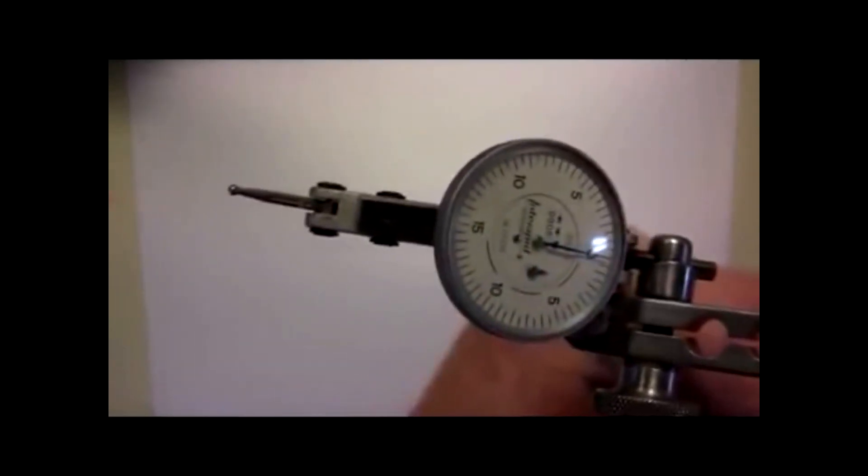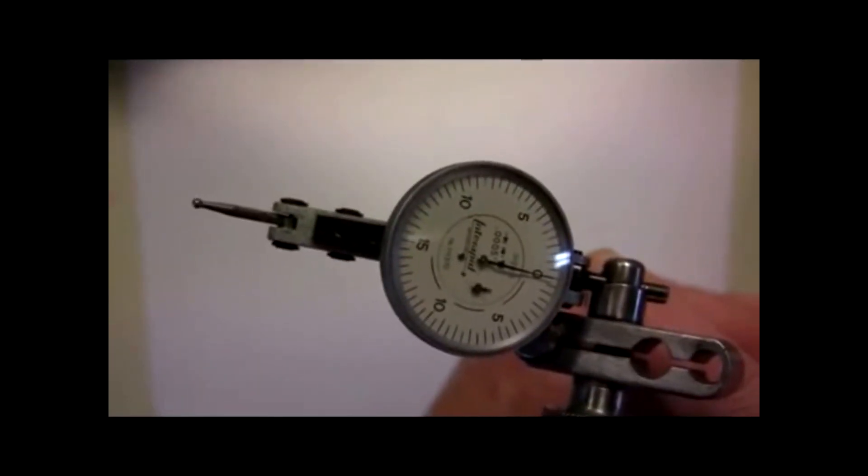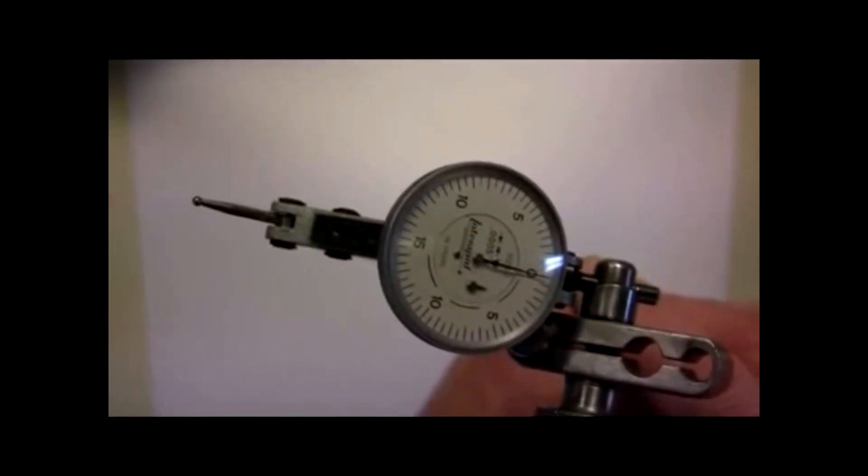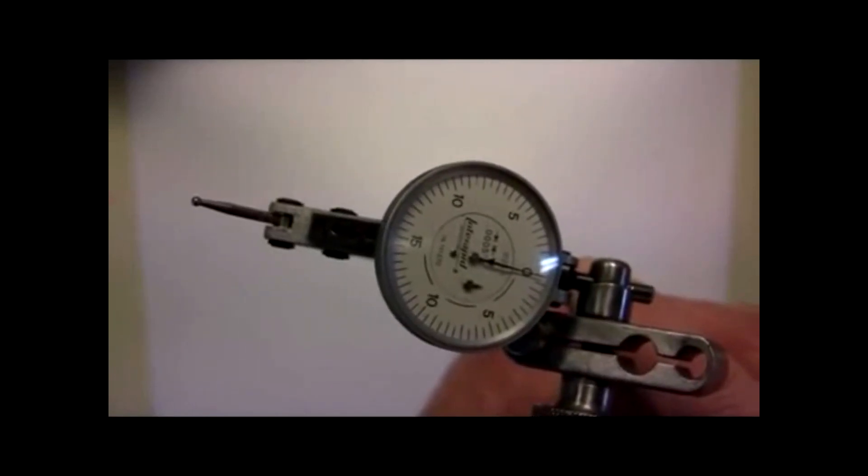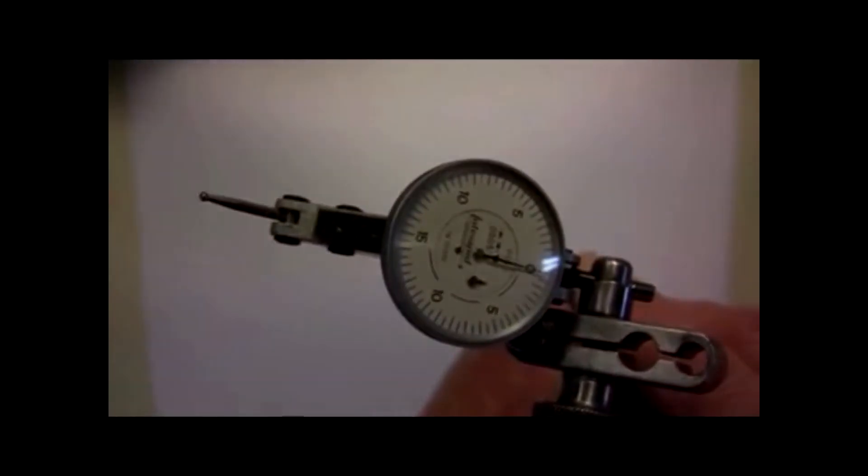But that's it. That's why I use and recommend, and I don't get paid to do this, the Interrapid indicators. Of course, this one is an inch and a half face with half thousands increments, and again, it reads both ways. So this is the tool and die guy, Phil Koerner. Hope this gave you some good information. It makes you a better machinist and a better tool maker.